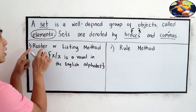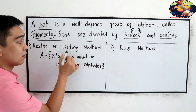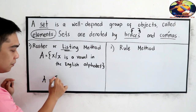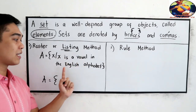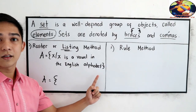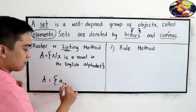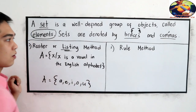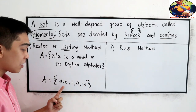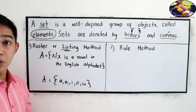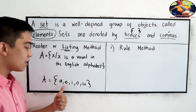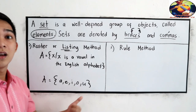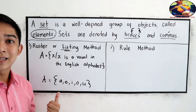Now we're going to use the roster or listing method. From the root word, we're going to list. So A is equal to the vowels in our English alphabet: {a, e, i, o, u} — separated by commas and enclosed in braces. We use lowercase letters for the elements and a capital letter to indicate the set.